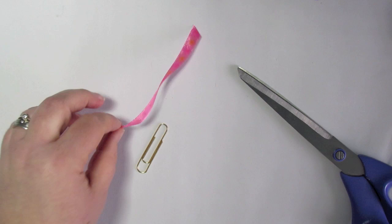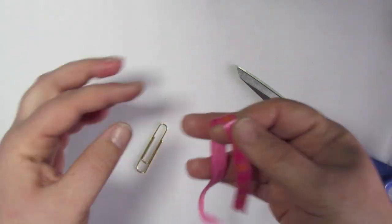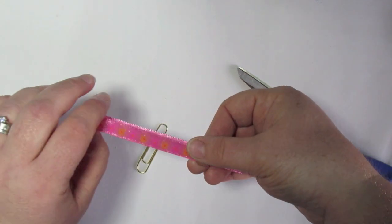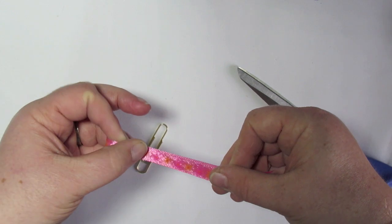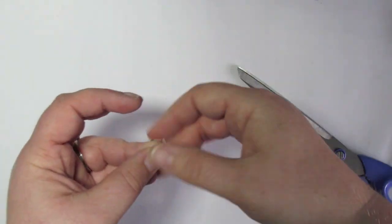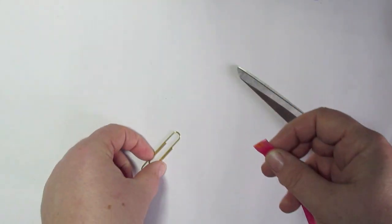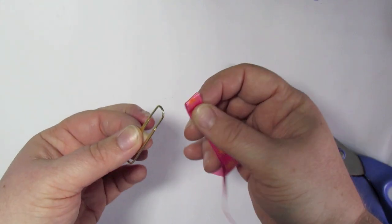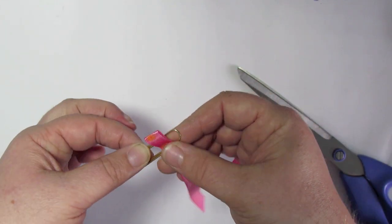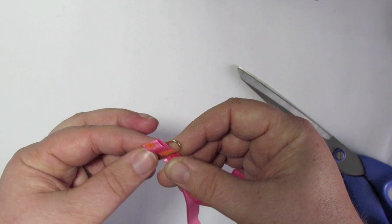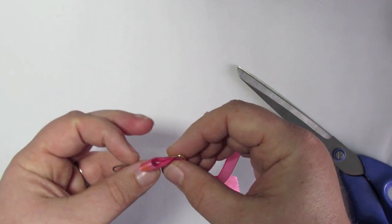So then I take my ribbon and fold it in half equal lengths, and I take my clip, and the folded bit I just push through the clip like so. Let's push it through.